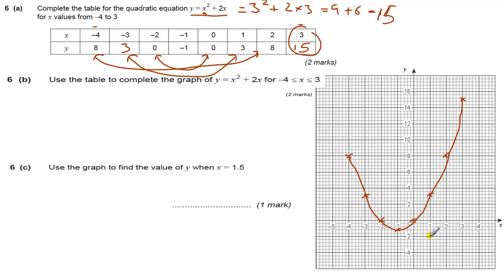So that would be another two marks. Use your graph to find the value of y when x equals 1.5. Now to do this, we need to draw a line on where x equals 1.5. So here we go. Yeah, so when x equals 1.5, so x is this value here. There's 1.5.